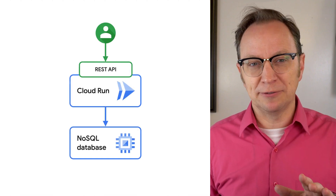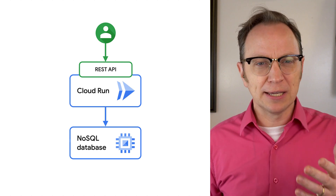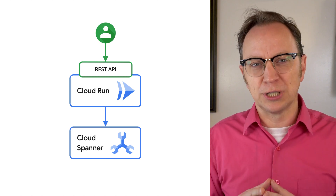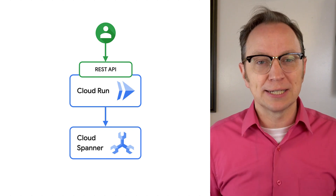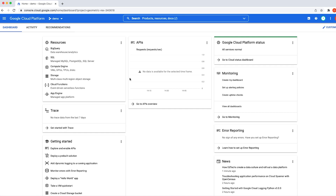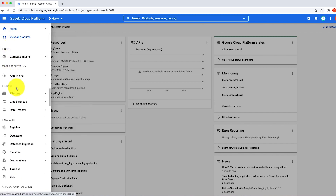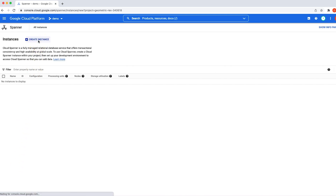It sounds like Spanner fits the needs of the customer — could we take it for a spin? My test app is a simple REST API for managing users. I'm thinking I'll swap out its NoSQL database with Spanner to get a feel for how much work it would take to migrate a real project. We can totally do that. First, go to the Cloud Console, click the hamburger menu, and scroll down to the databases section, and click Cloud Spanner. Then click Create Instance. I see a lot of options here — what should I pick?